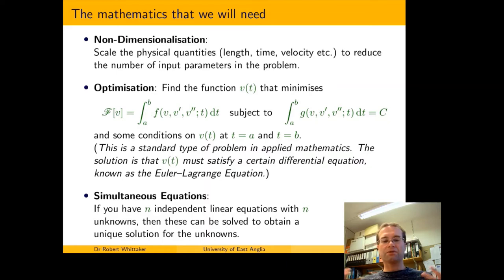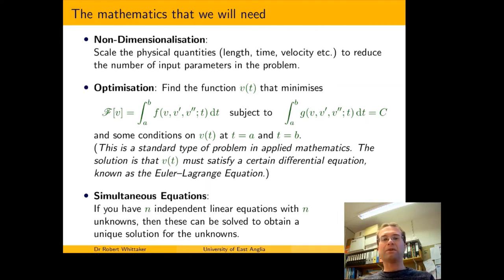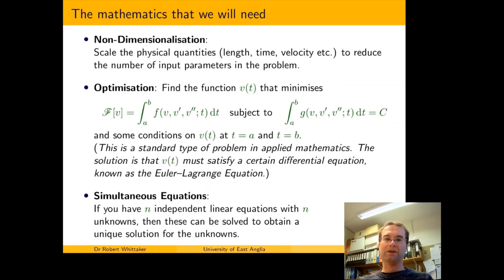We're also going to need results from a subject known as optimization. There's a well-studied class of mathematical problems where you're asked to minimise the integral of something that depends on a function you're trying to find. In our case we're trying to find a velocity profile v(t) and we want to minimise the discomfort. If we can write the discomfort as an integral over some function of our velocity profile, that gives us a problem in a form where we know how to find the solution. Having got a problem in this form, we can follow a set of mathematical rules to get a solution.